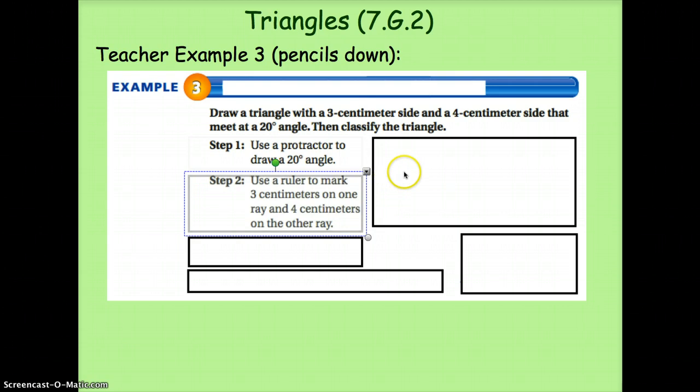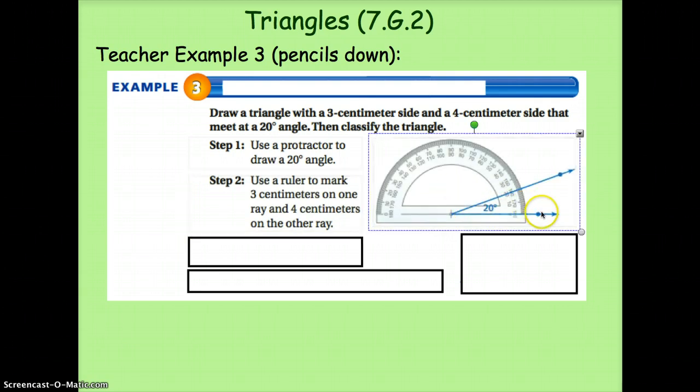Step two, use a ruler and mark three centimeters on one ray and four centimeters on the other ray. Okay, so notice here I've got my 20 degree angle and I've made my points. One being three centimeters, one being four.